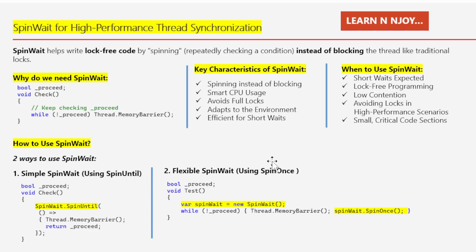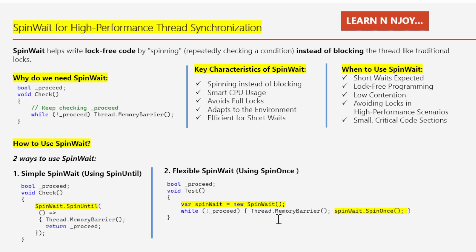Now for the flexible SpinWait using SpinOnce. Again, I have the boolean variable `_proceed` initialized to false. In the test method, I create an instance of the SpinWait struct: `var spinWait = new SpinWait()`. Then I use a while loop with `!_proceed`, `Thread.MemoryBarrier`, and `spinWait.SpinOnce`. I've manually created a SpinWait object and call its `SpinOnce` method in a loop. The while loop keeps running until `_proceed` becomes true. This second approach gives more flexibility.